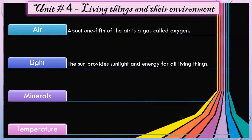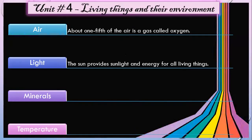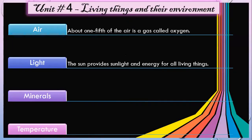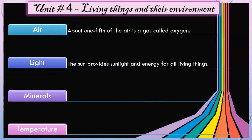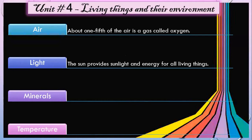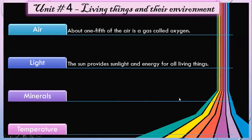The very important natural source is the sun. The sun provides sunlight and energy for all living things. Plants use sunlight to make their own food. Animals eat plants and so get energy indirectly from the plants.